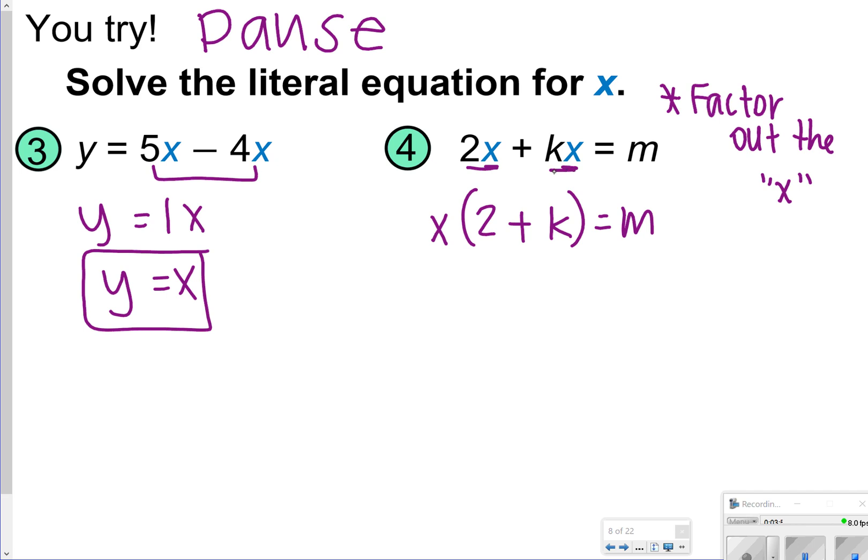Now it's a little bit easier to separate that x and get it by itself. So if you ever notice that they have similar terms in here, you can factor that out. And then one simple step, we're just going to divide by 2 plus k as a whole. So that my answer would be x equals m over 2 plus k.